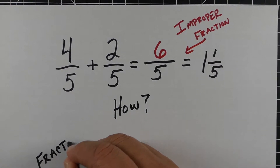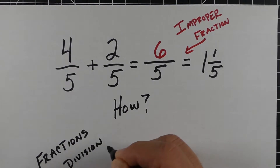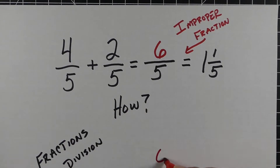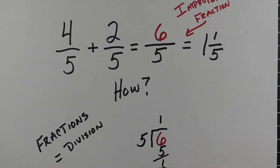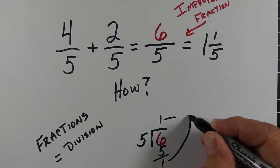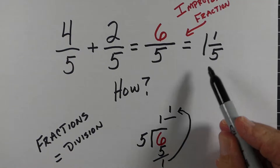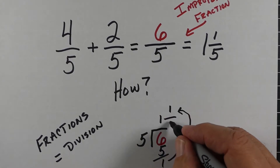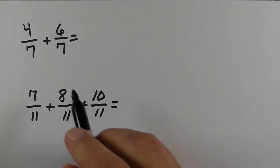You might ask yourself how that works. The thing to always remember is fractions are actually division problems. So we take our numerator — in this case 6 — and divide by our denominator 5. We get 1, and then we have a remainder of 1. We put it on top and keep our denominator 5, so the answer is 1 and 1/5.